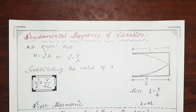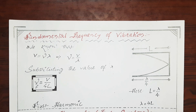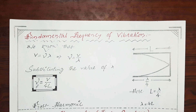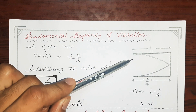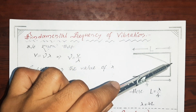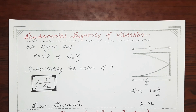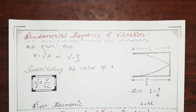So dear students, in the previous video itself, we have deeply studied the case of an open pipe. And now in this video, we are going to have a deep look on a closed pipe and its frequency ratio. Let me remind you that a closed pipe is the pipe which is open at the first end and closed at the second end. And of course, we'll have a look at some daily life examples based on this closed pipe.